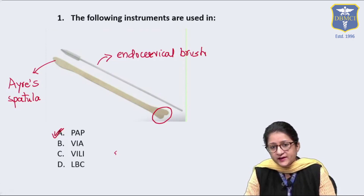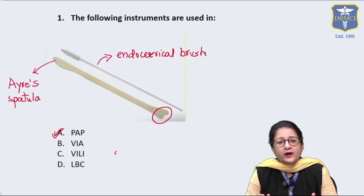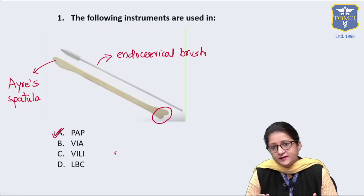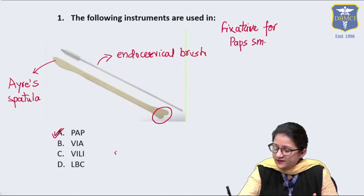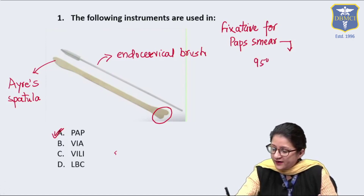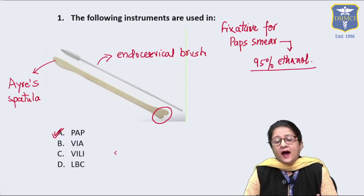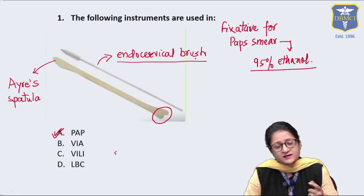A slide is made and it is not allowed to air dry — it is immediately put in the fixative. The fixative for the conventional PAP smear, where slides are made using the IR spatula, is 95% ethanol. A separate slide is also made via the endocervical brush.